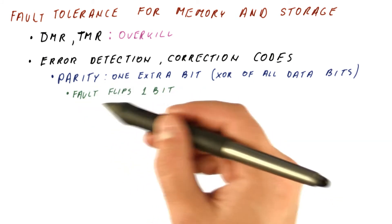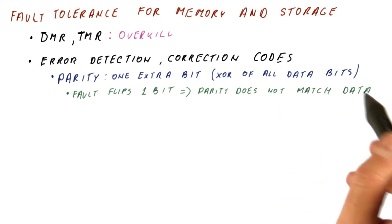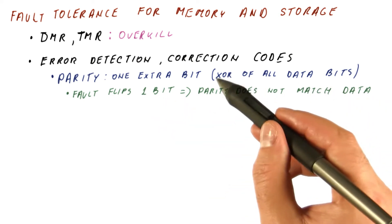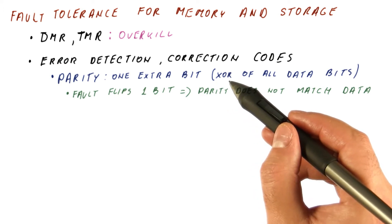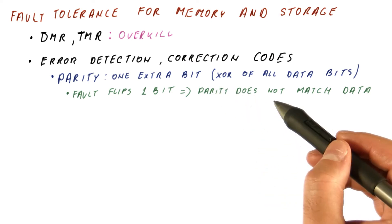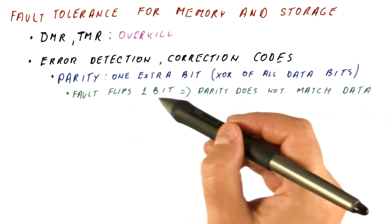When we have parity, if a fault flips any one of the bits, including the parity bit, the parity bit will no longer match the data. By flipping one of the bits, we're changing the result of this XOR to be the opposite of what it previously was. When we read the data and parity and see that the parity does not match the data, we assume there has been a bit flip. That's how we detect a single bit error.